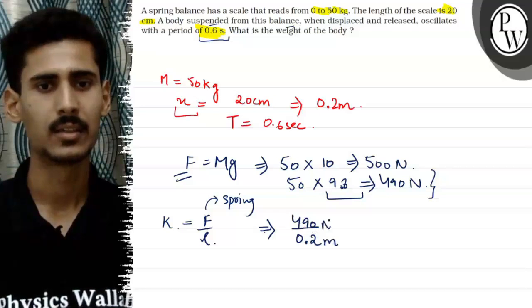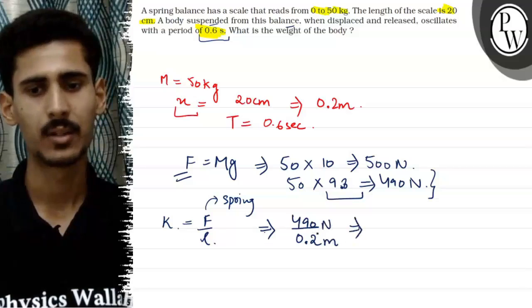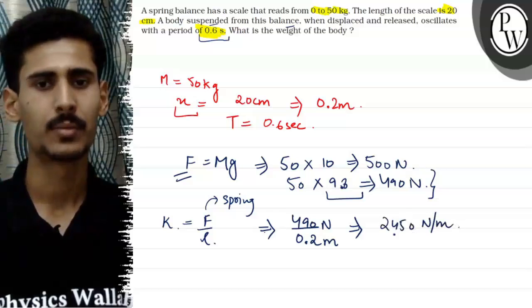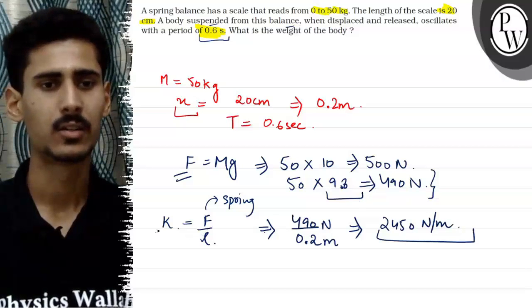So our K will come out to be 2450 Newtons per meter. This will be our approximate value for the K.